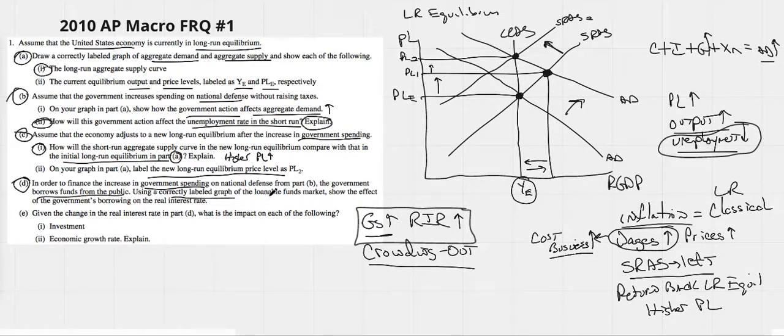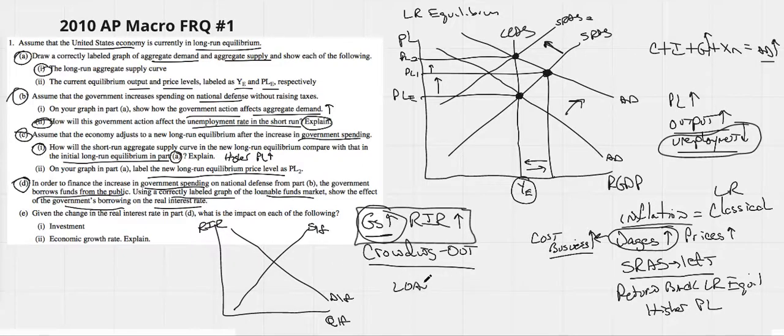We're going to explain it right here. It says, using a correctly labeled graph of the loanable funds market, show the effect of the government's borrowing on the real interest rate. So, we need to know how to draw the loanable funds market. It is just a supply of loanable funds, demand for loanable funds. You do have to know that real interest rate is on the horizontal, quantity of loanable funds on the, sorry, real interest rates on the vertical, quantity of loanable funds on the horizontal.